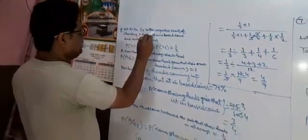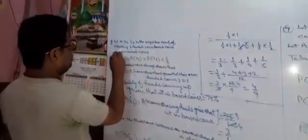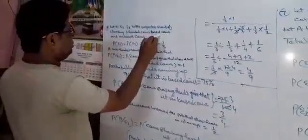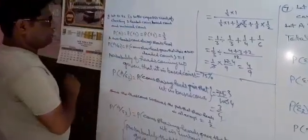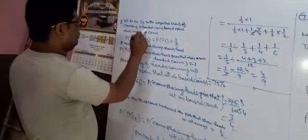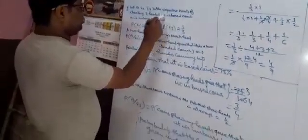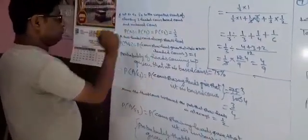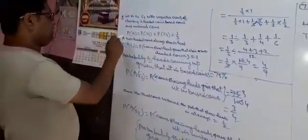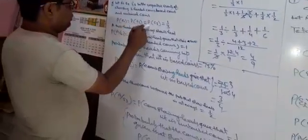Let E1, E2, E3 be the respective events of choosing the two-headed coin, biased coin, and unbiased coin. E1 means two-headed coin, E2 means biased coin, E3 means unbiased coin. P(E1) = P(E2) = P(E3) = 1/3.